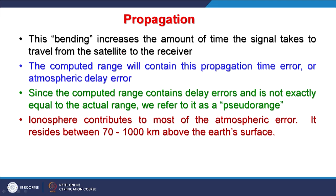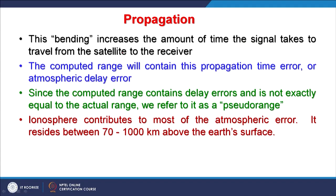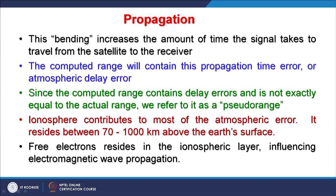The ionospheric layer contributes the most to atmospheric errors. It resides between 70 to 1,000 kilometers above the Earth's surface — quite a thick layer for bending these signals. Free electrons reside in this ionospheric layer and influence electromagnetic wave propagation, creating problems in signal transmission.